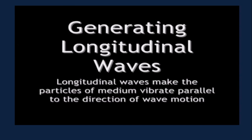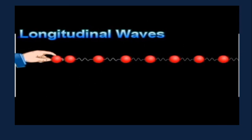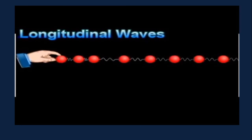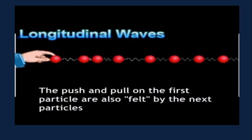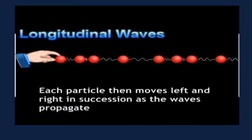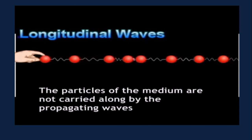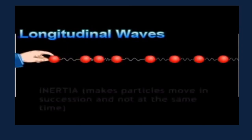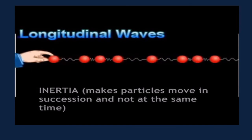Let us see how longitudinal waves are generated. Longitudinal waves make the particles of the medium vibrate parallel to the direction of wave motion. The push and pull on the first particle are also felt by the next particles. Each particle then moves left and right in succession as the waves propagate. The particles of the medium are not carried along by the propagating waves. Inertia makes the particles move in succession and not at the same time.